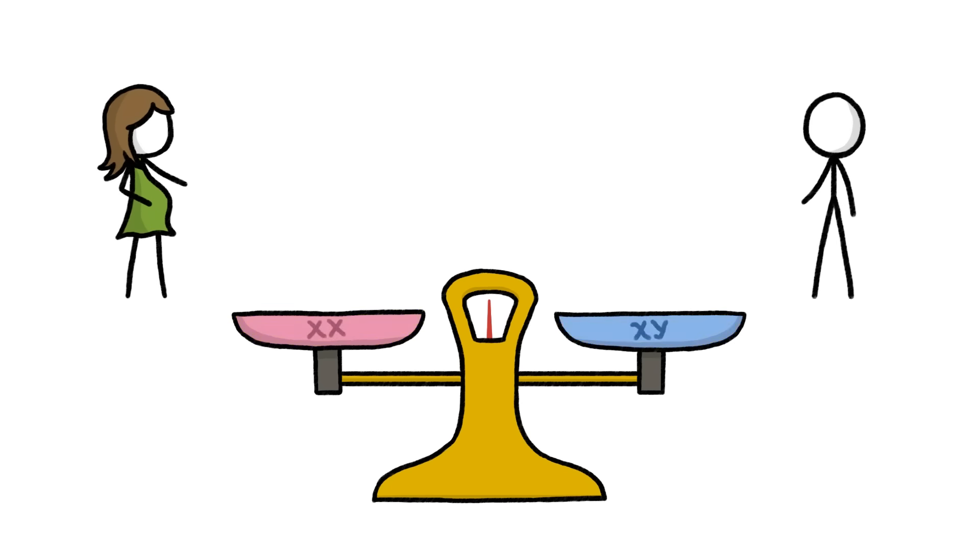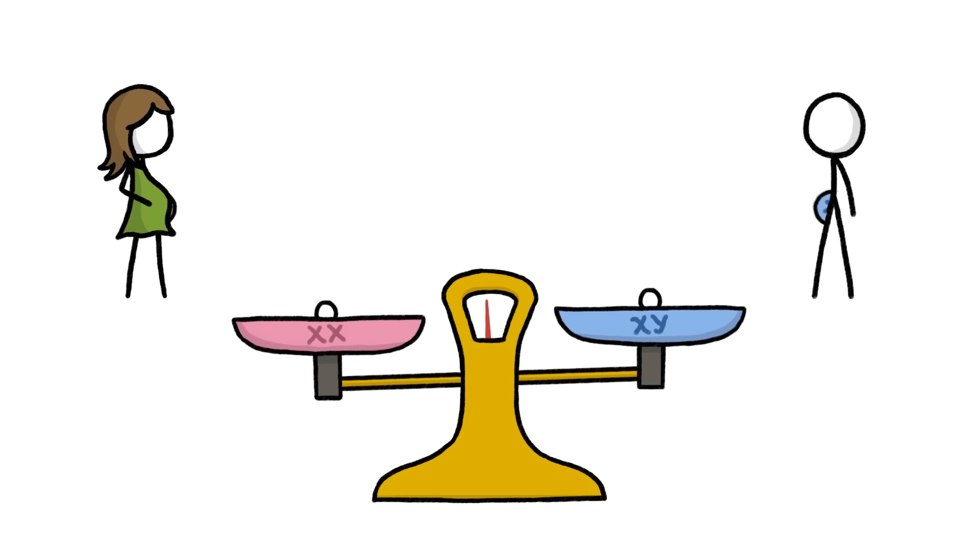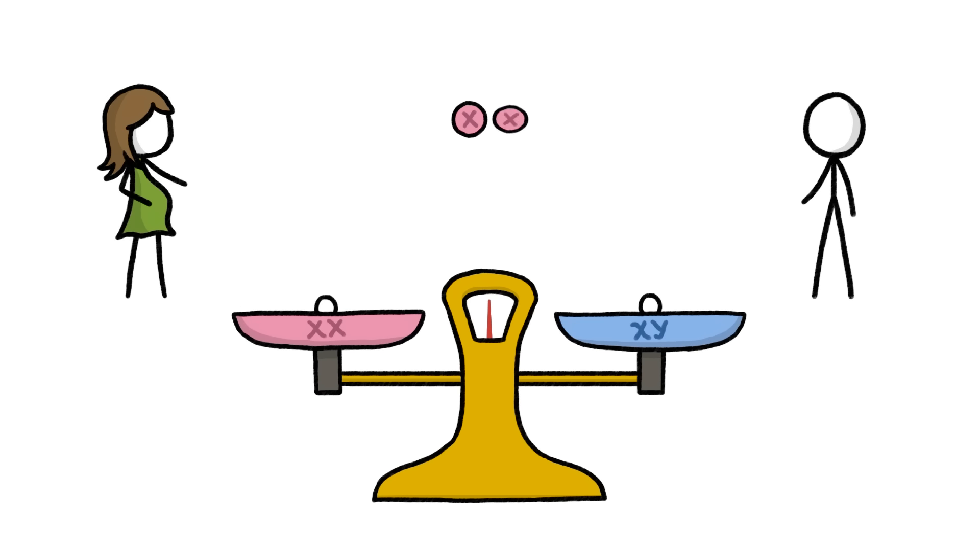Most parents-to-be assume that the sex of their child comes down to a flip of the chromosomal coin, with an equal chance of having a boy or a girl. But in reality, the odds aren't even.